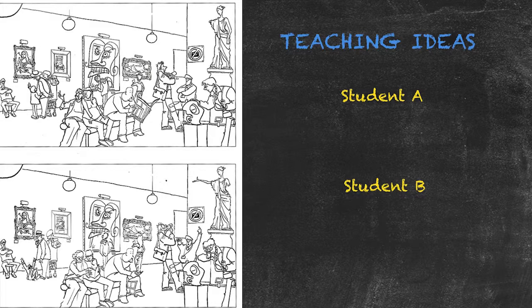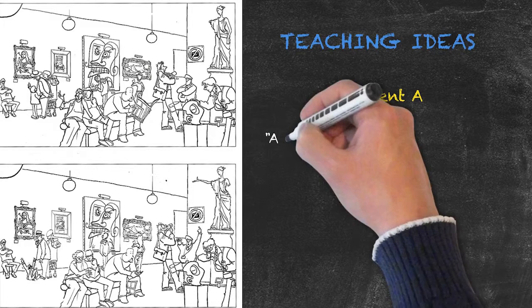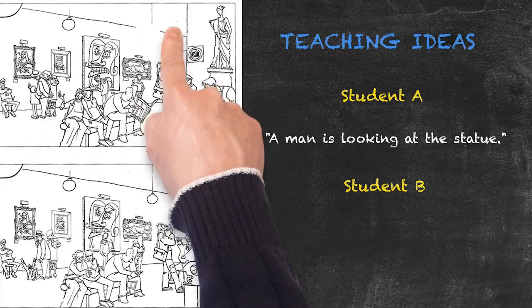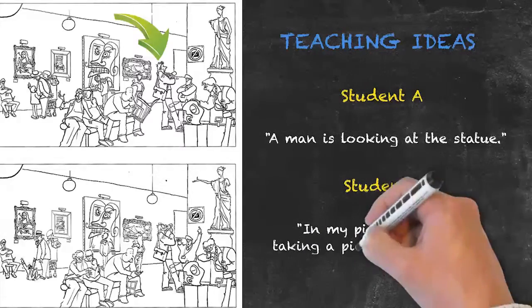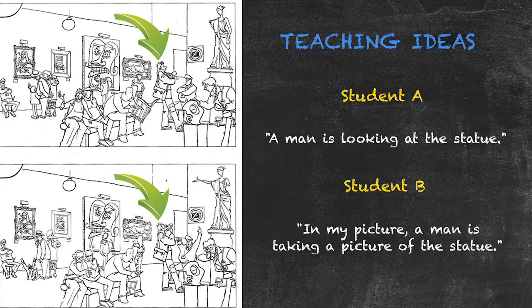What we'll have the students do is make statements such as, the man is looking at the statue. Student B will then find a man near the statue and say, oh, in my picture, the man is taking a picture of the statue.